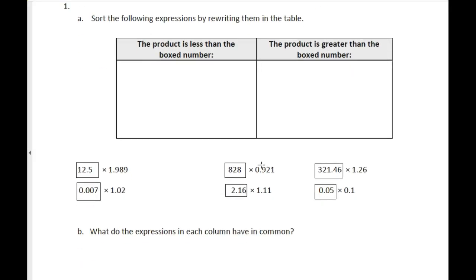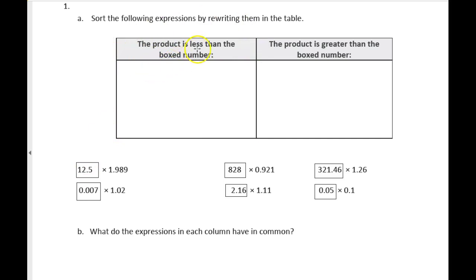This problem says to sort the following expressions by rewriting them in the table. To save time, I'm just going to draw arrows to show where they should go. This box is where the product is less than the box number, and the other is where it gets bigger than what you started with.